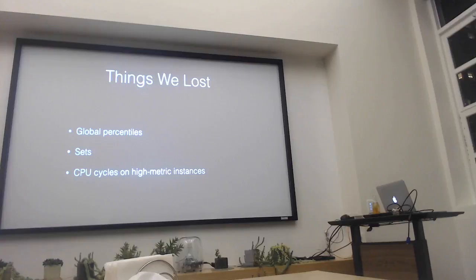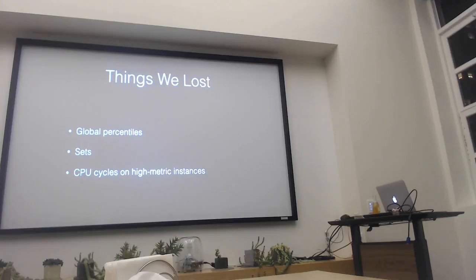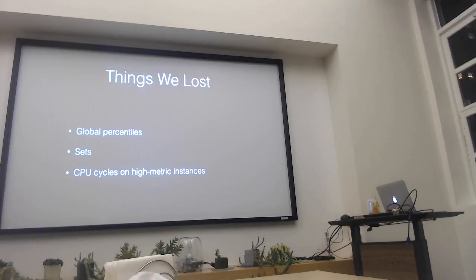We also lost sets for the same reason. A set in StatsD — if you're not familiar with it — is like for every error that occurs, I want to count how many unique merchants saw that error. And so you get this count at the end that says seven people saw this error or one person saw this error. It's a good indicator because you can use it to see the breadth of a problem. But we lost it because we only had the host-local set — we could only say how many times it happened on this box, and we don't know if the same merchant had this happen on every box.